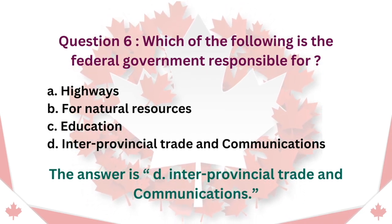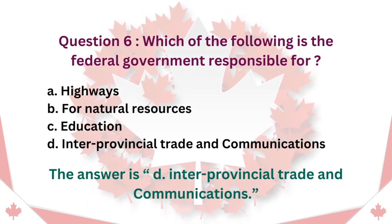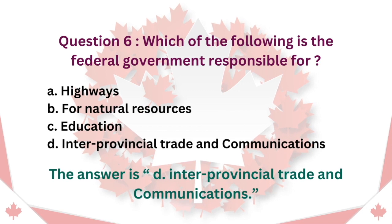Question 6: Which of the following is the federal government responsible for? A. Highways. B. Natural resources. C. Education. D. Interprovincial trade and communications. The answer is D. Interprovincial trade and communications.